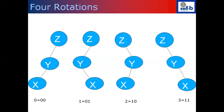To identify which of the four cases applies, we assign a binary number: when going right, write one; when going left, write zero. Left-left gives binary 00 = case 0; left-right gives 01 = case 1; right-left gives 10 = case 2; right-right gives 11 = case 3. In code, start with counter c = 0; when going right, increment by one; then multiply by two before the next step.